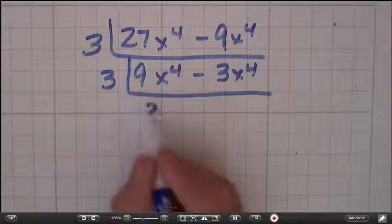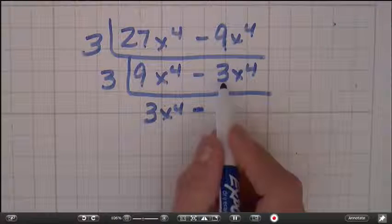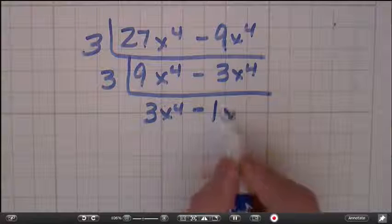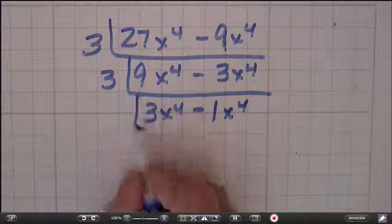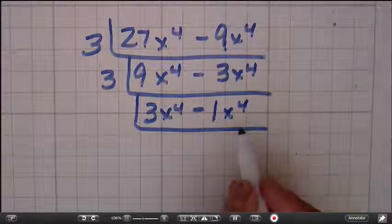So 9 divided by 3 is 3. I'm going to leave my minus sign there. 3 divided by 3 is 1. And now I'm going to look at my variables, x to the 4th and x to the 4th. Is there something they have in common? Well, yeah, it's x to the 4th.